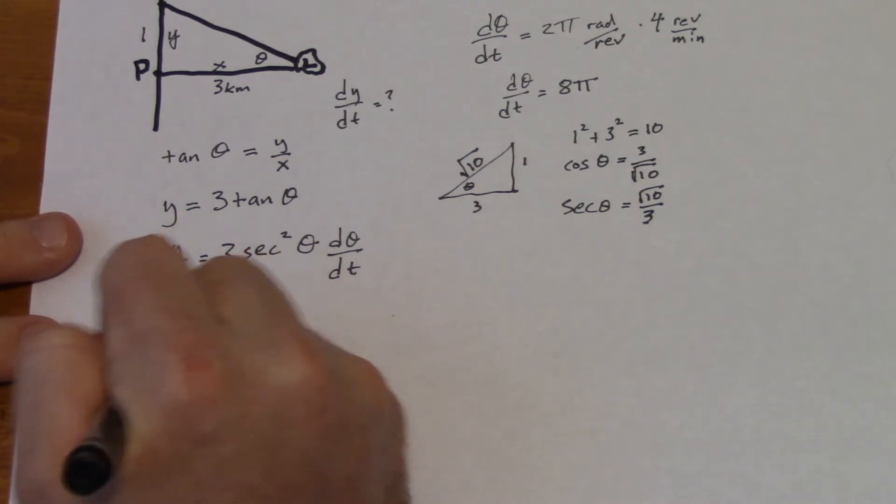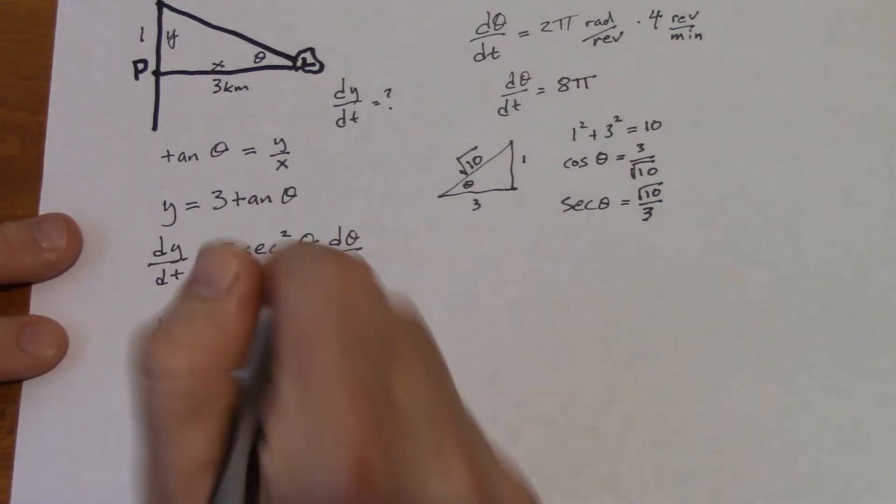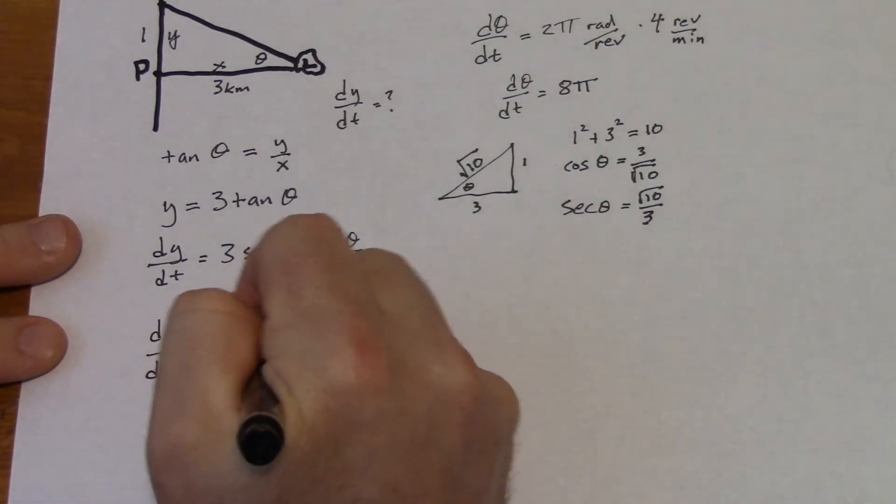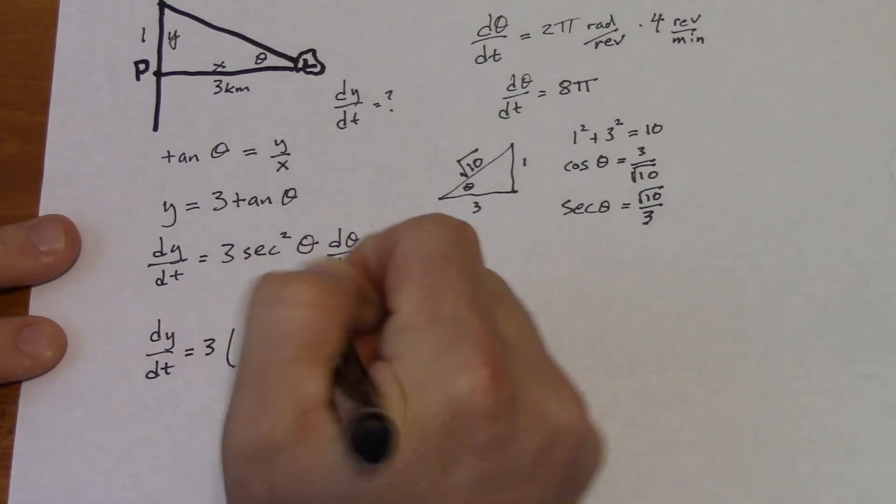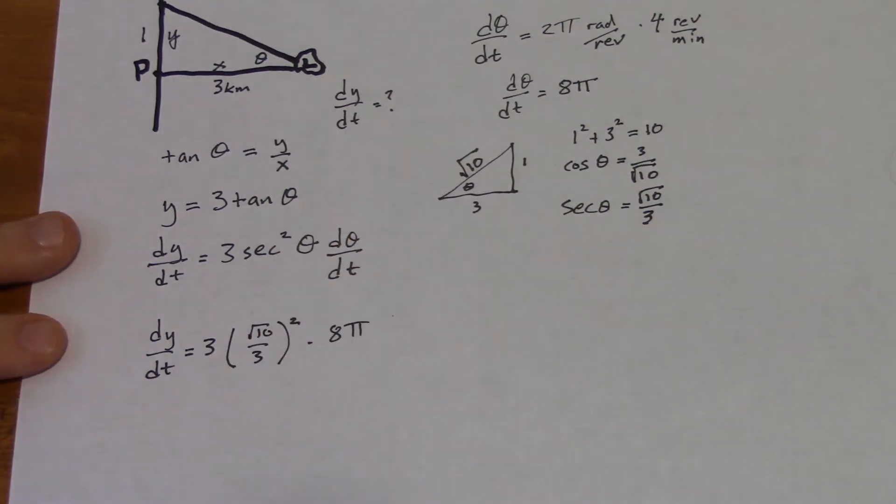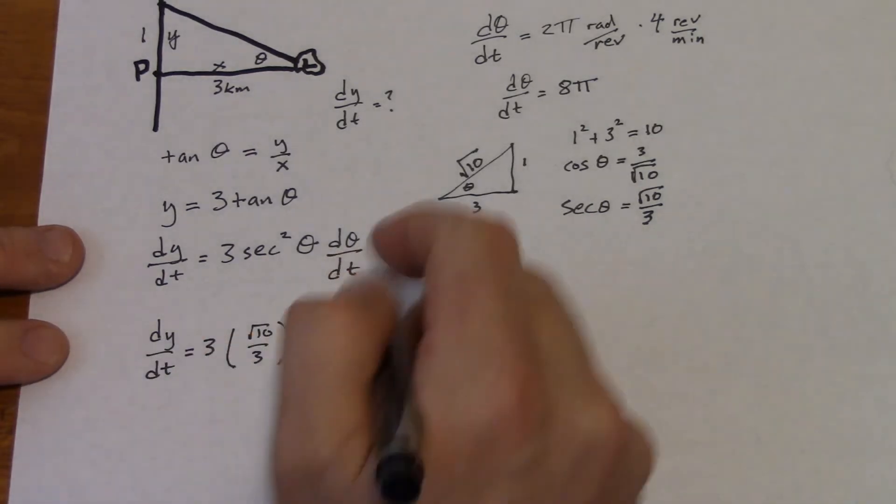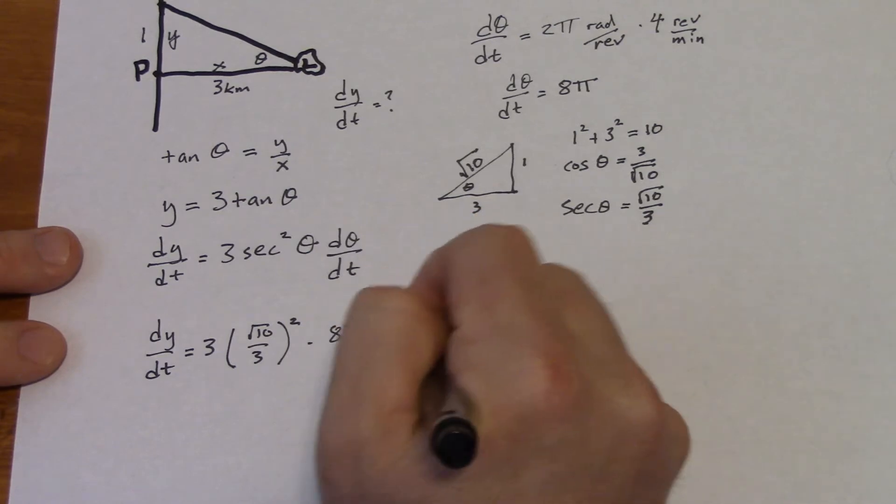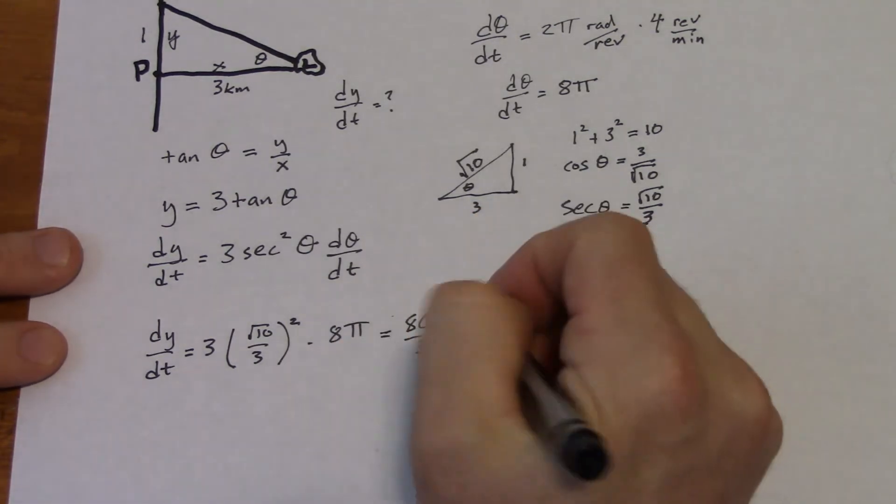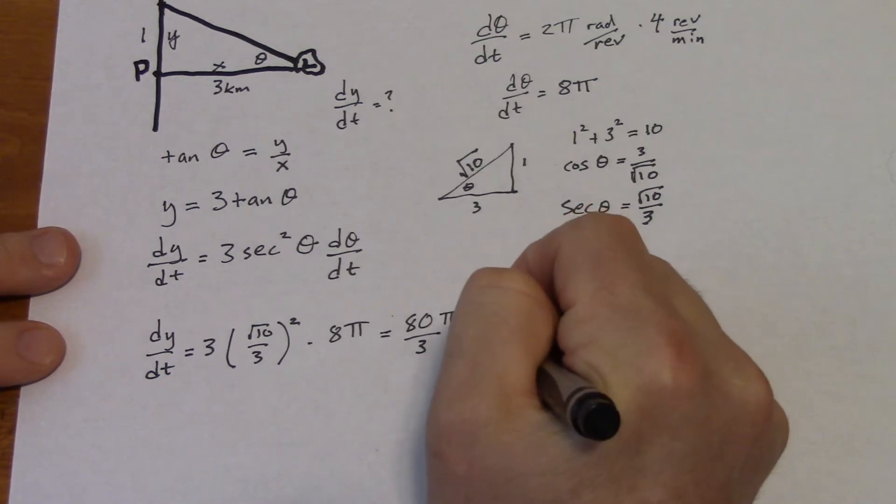dy/dt is going to be 3 times (√10/3)² times 8π. Now if we multiply all that out, the square is going to cancel that square root out, so we're going to have 10/9, and then 3 cancels with one of the 3's in the bottom there, so you end up with 10/3 out of that. And that times 8π is going to give us 80π/3, and the units here are kilometers per minute because that's what everything is measured in.